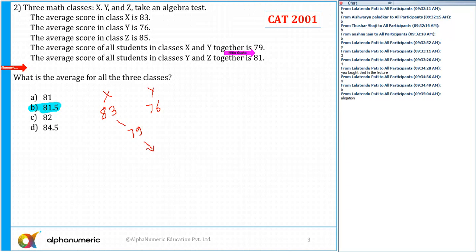So apply the allegation rule: 83 minus 79 is 4, and 79 minus 76 is 3. This gives me the ratio of the number of students in class X to class Y, that is equal to 3 by 4.